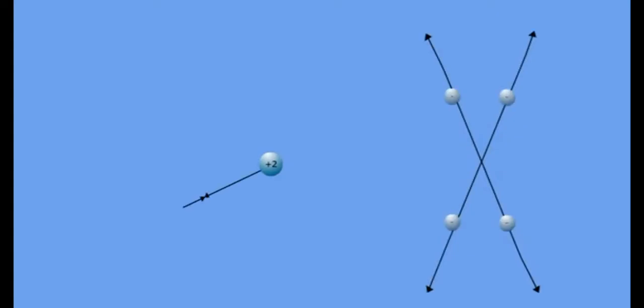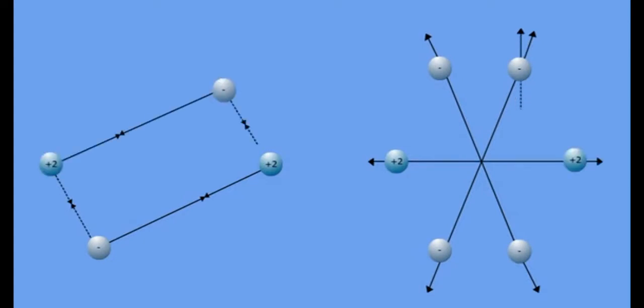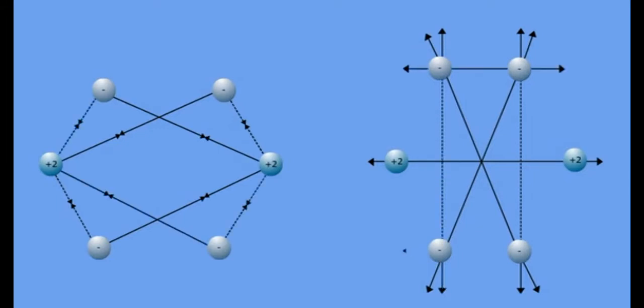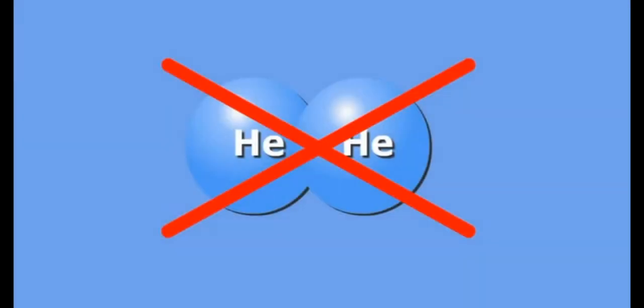Therefore, repulsive forces predominate and the potential energy of the system increases, which leads to instability. Thus, He2 represents an unstable state and a chemical bond is not formed between helium atoms. Hence, the He2 molecule is not formed.